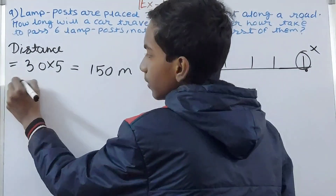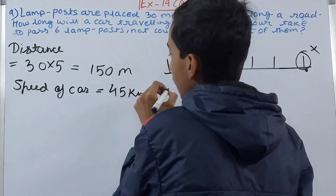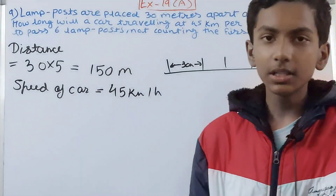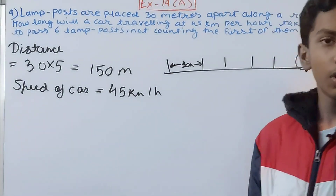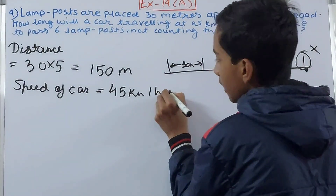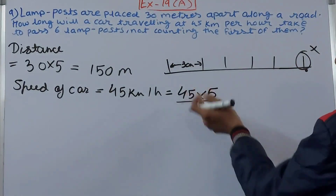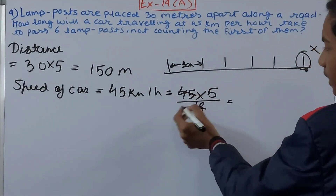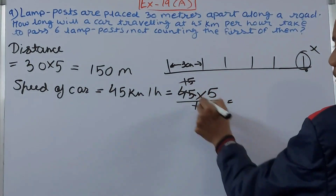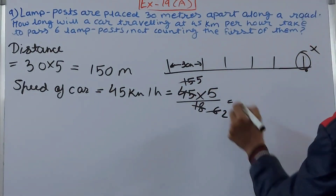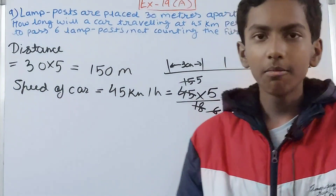We know the speed of the car is 45 kilometers per hour, but the distance is in meters. Since the units don't match, we must convert the speed into meters per second. So 45 km/h becomes 45 × (5/18). Cancelling, this gives us 25/2 meters per second. This is the speed of the car in meters per second.